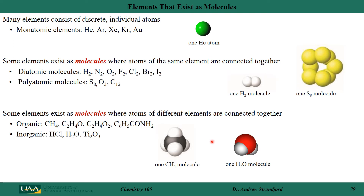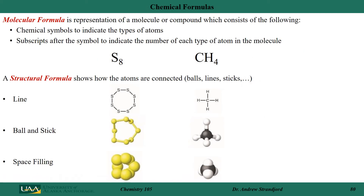That is just one way that we represent molecules. Let's now take a look at other ways to represent molecules — we're going to call these formulas. There are two basic types of formula in chemistry. One is a molecular formula, which just represents the atoms that are in my molecule or compound.